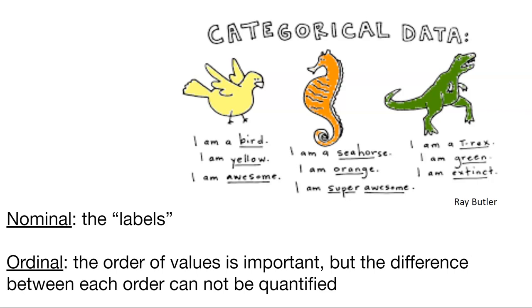Categorical data can be of different kinds. As the graph here says, I am a bird, I am yellow, I am awesome. I am a seahorse, I am orange. I am a T-Rex, I am green, I am extinct. These are all examples of different categories of data. So data could be nominal. These can be the labels, this could be things like the bird, the color yellow, the adjective awesome.